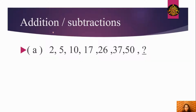The first example is related to addition and subtraction. The question is: 2, 5, 10, 17, 26, 37, 50 — what is the next answer? We should find it. Just see the difference between each term.